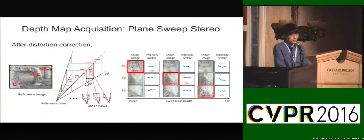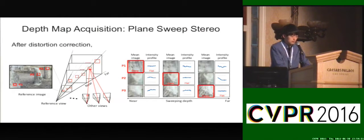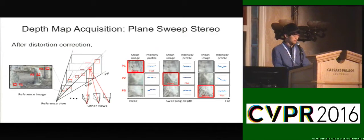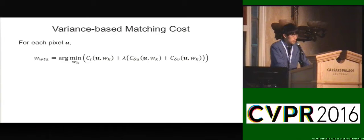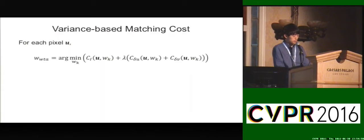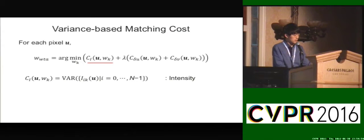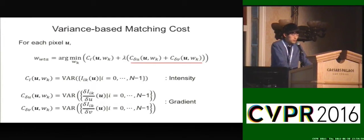Since we obtained the intrinsic and extrinsic camera parameters, we can apply the plane sweep stereo for dense depth map acquisition. One interesting observation is that if the depth label is correct, the observed intensity profile is consistent thanks to the small viewpoint variation. Therefore, our matching cost is designed to leverage this benefit. For each pixel, we measured the variance of intensity profiles collected from all images based on a sweeping inverse depth. Two types of variance were used: intensity variance and gradient variance. Compared to the conventional SAD, which can be biased by the reference image, variance has the advantage of considering all images equally.